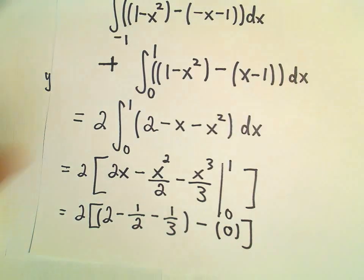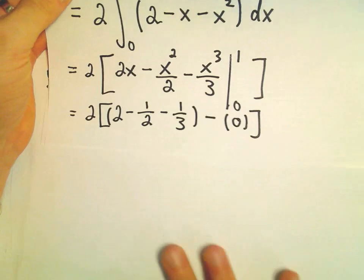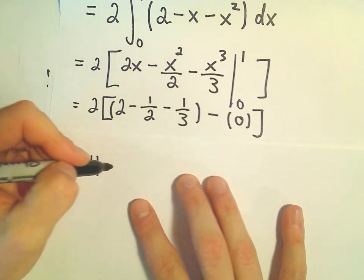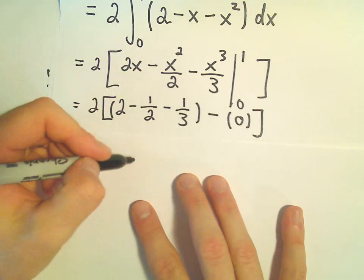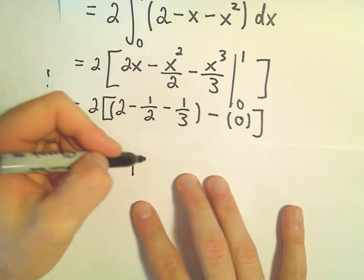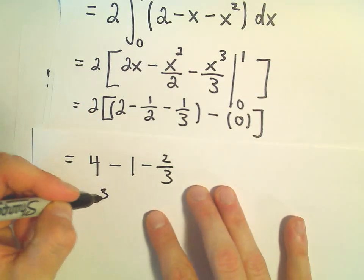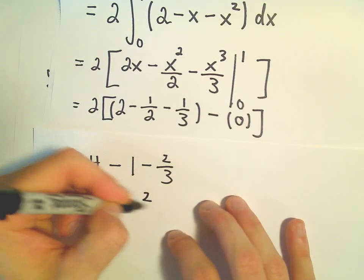I'm going to go ahead and distribute the 2 because that's going to get rid of at least one of my fractions. So 2 times 2 would be 4, 2 times 1 half will be 1, and then 2 times 1 third will be 2 thirds. So 4 minus 1, that's going to give us 3 minus 2 thirds.